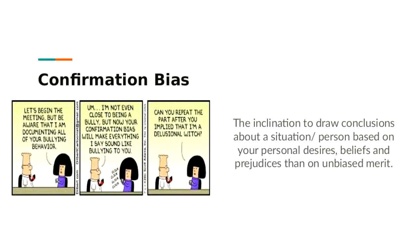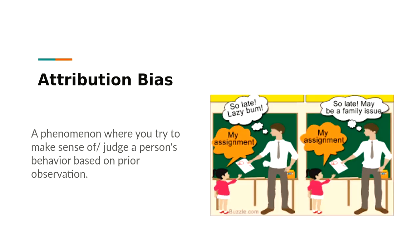Attribution bias is a phenomenon where you try to make sense of or judge a person's behavior based on prior observation of them or someone like them. This occurs when a hiring team sees something unusual on a resume and assumes it will affect a candidate, or when a traumatic event affects a coworker and others assume it will impact their work. A way to avoid this is to simply ask the candidate to explain whatever seems unusual rather than assuming it will affect them.